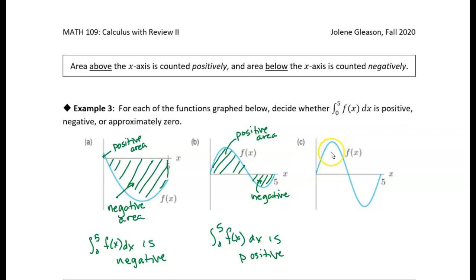And then finally, this last curve, you can see, again, we've got some positive area, and we've got some negative area. This is positive, positive area. This is negative area.